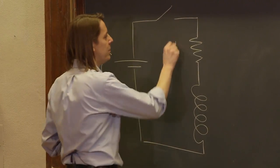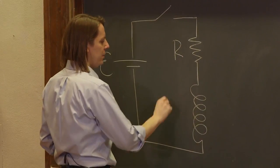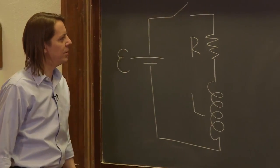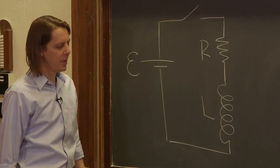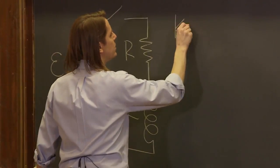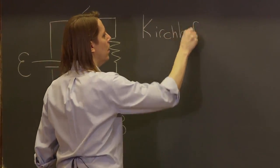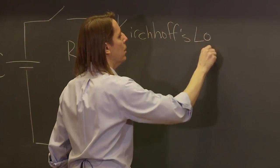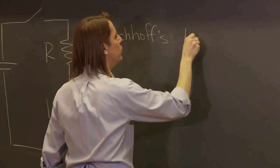So now, we really just want to do this mathematically, so let's label that R, let's label this L, some inductor with inductance L. And the way to do it mathematically is Kirchhoff's loop rule.